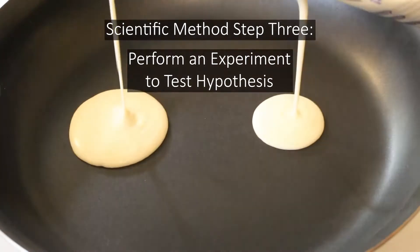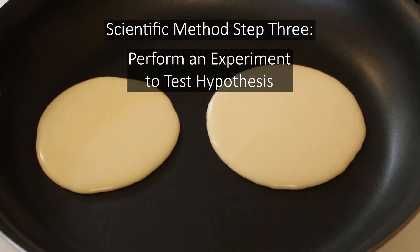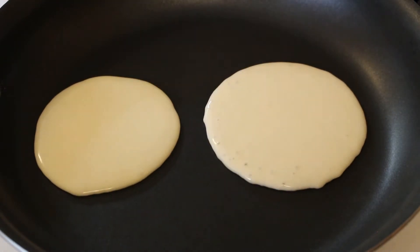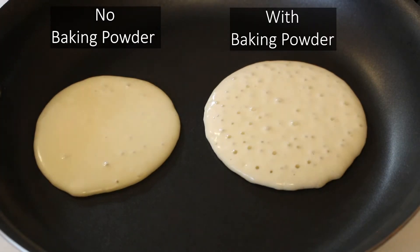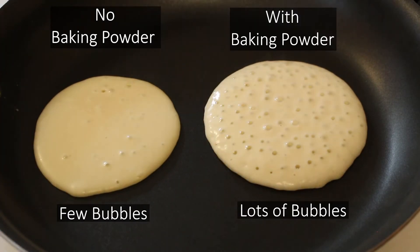The next step is to perform an experiment to test your hypothesis. For our experiment, we would make a batch of pancakes without baking powder and compare the results to a batch made with it. If you're curious what that looks like, just see for yourself.